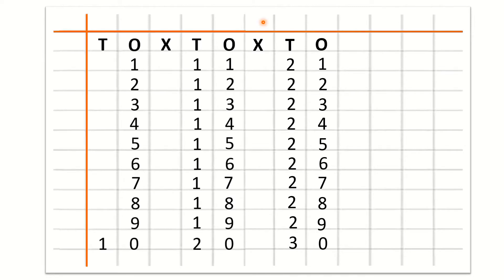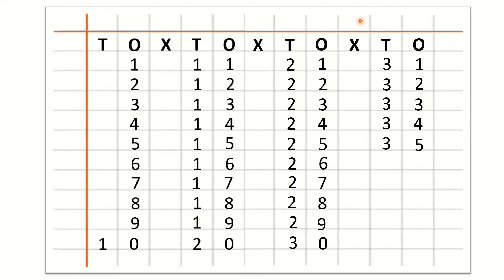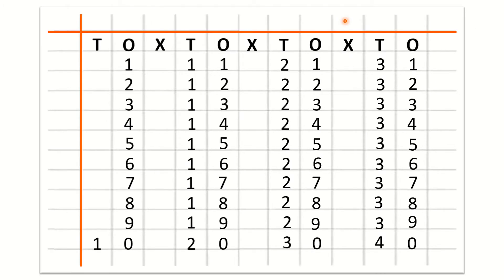Now children we will learn how to write 31 to 40 counting with the method of tens and ones. So after O we will write cross and we will not write anything under cross. After cross we will write T for tens and O for ones. Now we will write 3 under T and 1 under O for 31. After 31: 32, 33, 34, 35, 36, 37, 38, 39, 40.